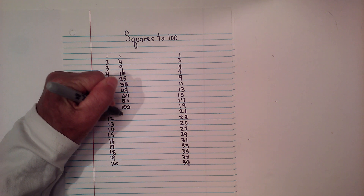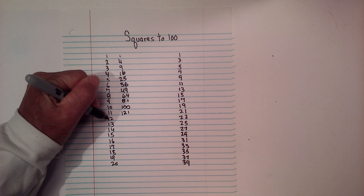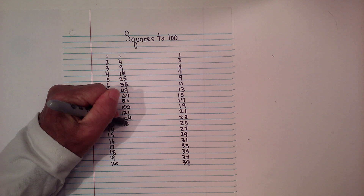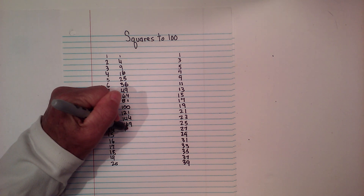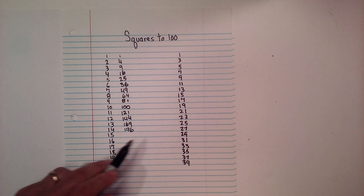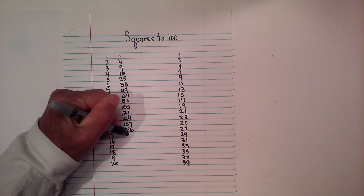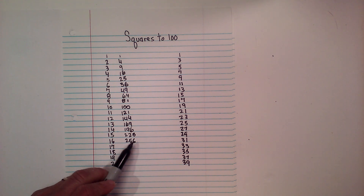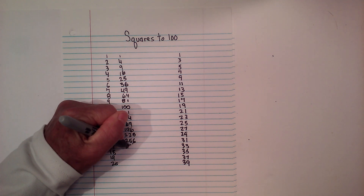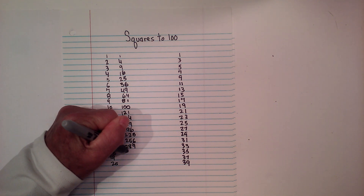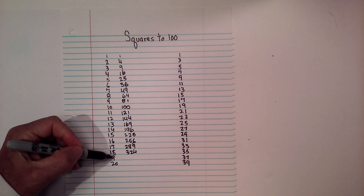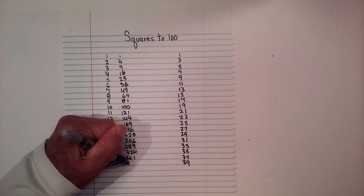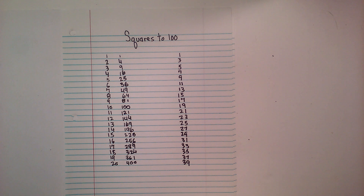For 11, it's 21 plus 100, which is 121. For 12, it is 144. For 13, 25 plus 144 is 169. Then we have 196. 196 plus 29 is 225. Continuing: 256. For 17, 256 plus 33 is 289. Then we have 324. 324 plus 37 equals 361. For 20, it is 361 plus 39, which is 400. So now I have gone 1 through 20.